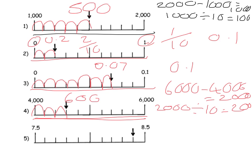And it would actually be 4600, because remember I wasn't starting at 0. So that would be 4000, 4200, 4400, 4600.